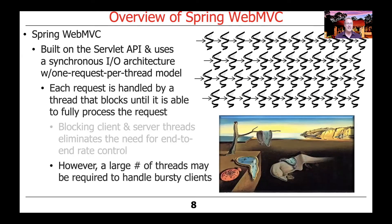The downside is that you may need a large number of threads to handle bursty clients. If you have a bunch of clients sending data in bursts at different times, you may need lots of threads. The default that comes with Spring out of the box is something like 200 threads, and at that point you can't handle anything more. Even creating 200 threads is excessive in most environments these days, especially when you consider the alternatives we'll talk about when we discuss WebFlux.